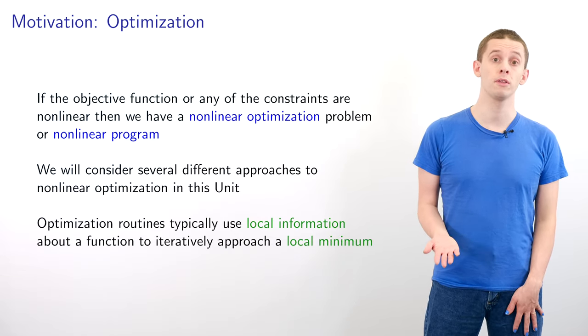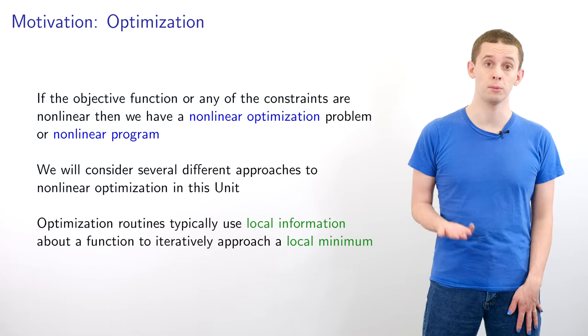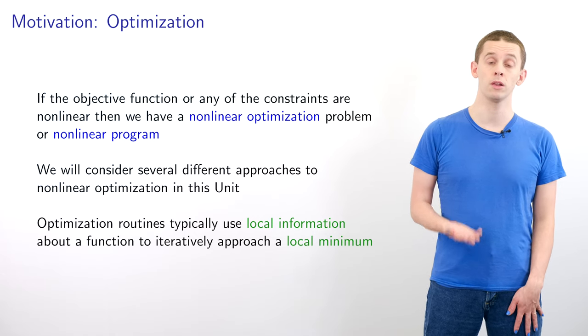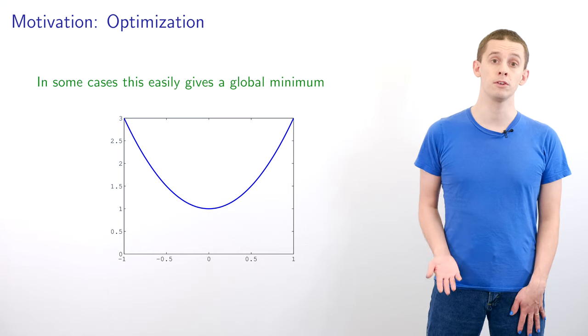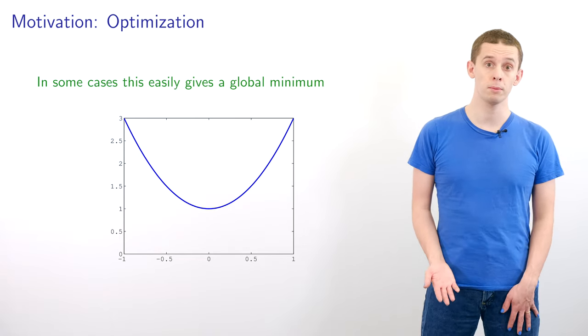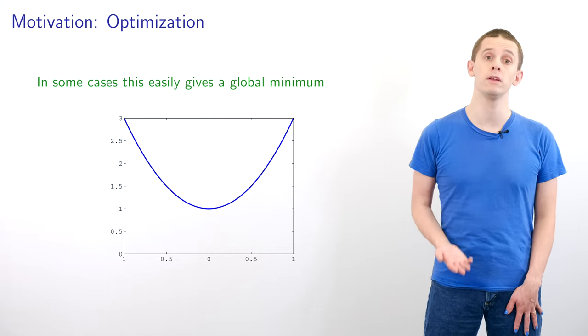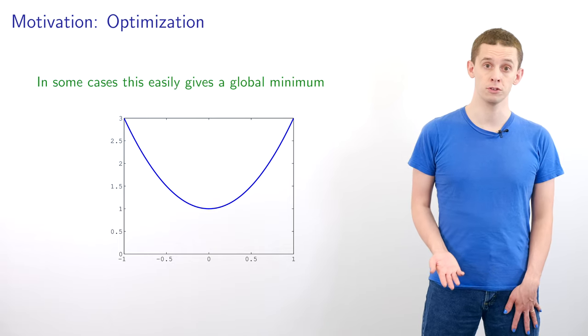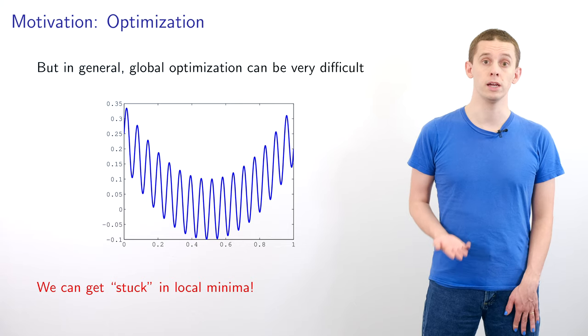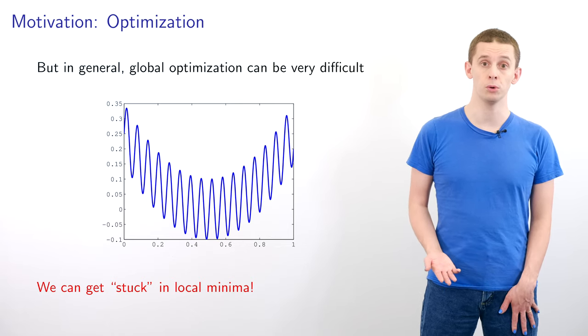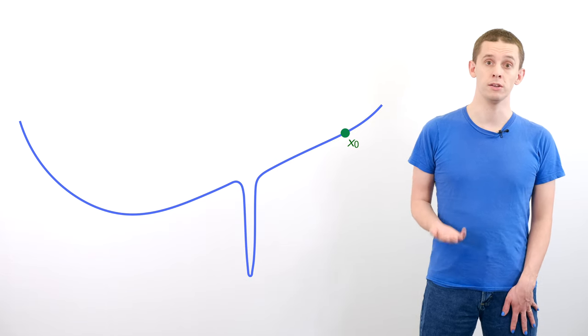If the objective function or any of the constraints are non-linear then we have a non-linear optimization problem or non-linear program. And in this unit we're going to look at several different approaches for non-linear optimization. And optimization routines typically use local information about a function to iteratively approach a local minimum. And in some cases this can easily give us a global minimum. So for example if we look at this parabola and we apply our optimization approach, then we might iteratively find this local minimum and that will indeed be the global minimum in this case. However for more complicated functions that might not be true. And if we look at this function then we can imagine that our local optimization routine could get stuck in one of the many local minima that is not the global minimum.